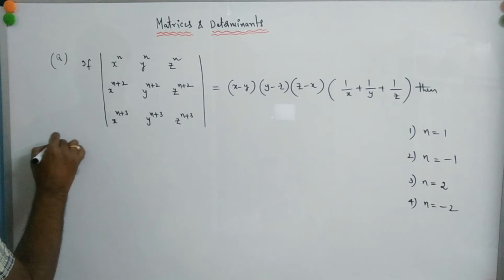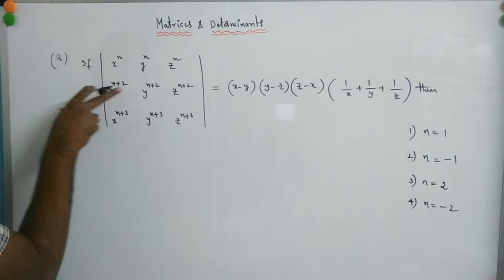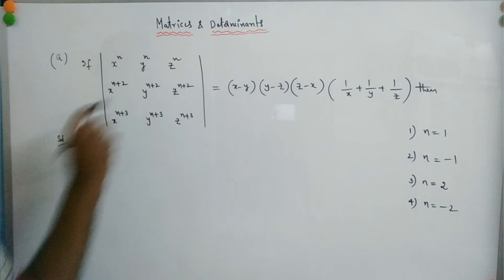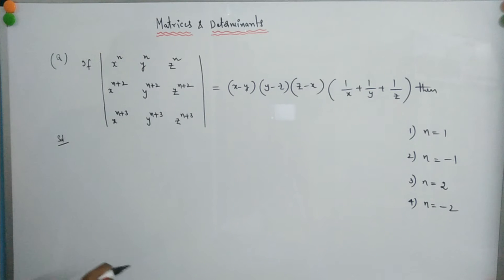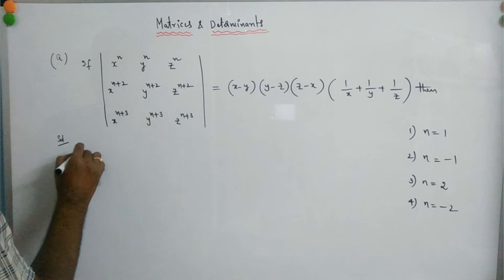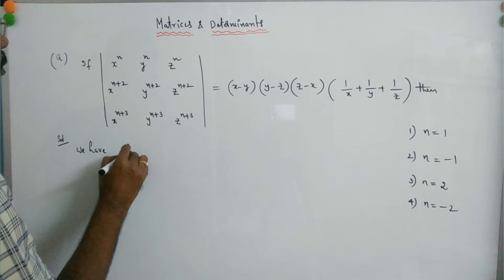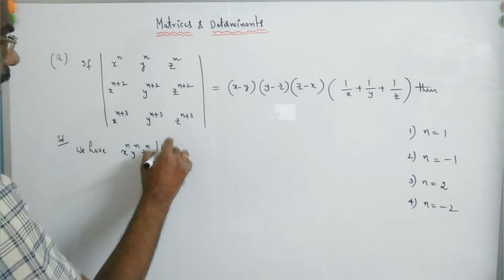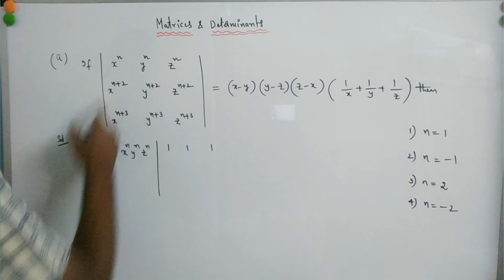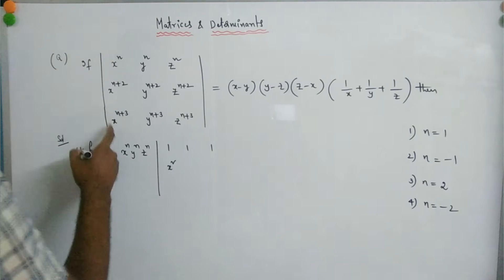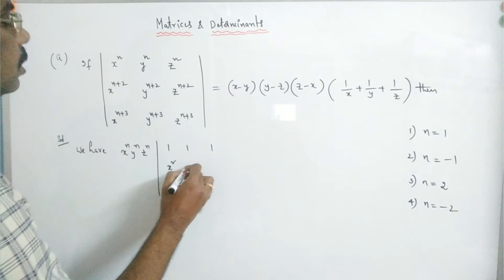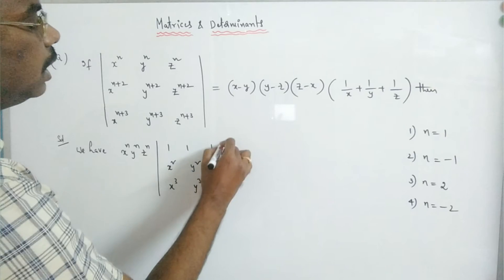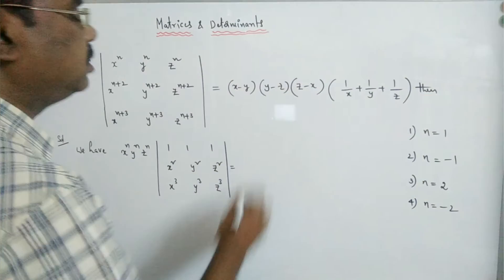Now we take x^n common from the first row, y^n common from the second row, and z^n common from the third row. So we have x^n · y^n · z^n into the determinant of: 1, 1, 1; x², y², z²; x³, y³, z³.